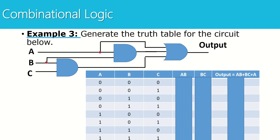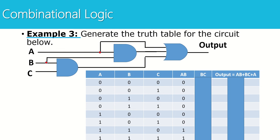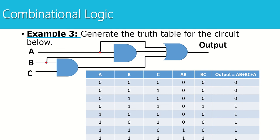Here's the truth table with eight rows. Inputs A, B, and C are set up. There's one column for each gate: one column for the first AND gate (output: A AND B), one column for the second AND gate (output: B AND C), and one column for the final OR gate which ORs three things together. The output expression is: (A AND B) OR (B AND C) OR A. Fill in A AND B, then B AND C, then OR all three — A AND B, B AND C, and input A — together to get the final output.